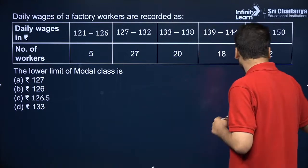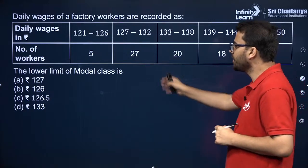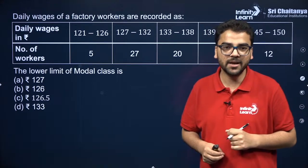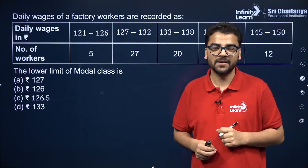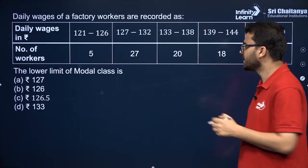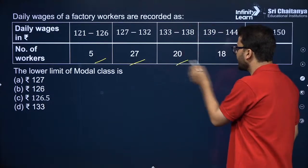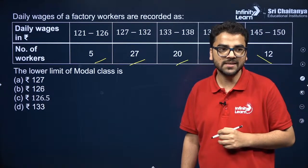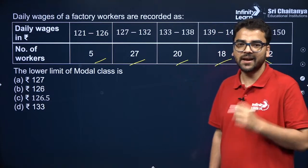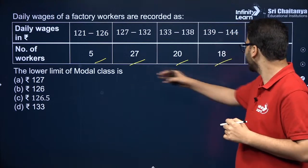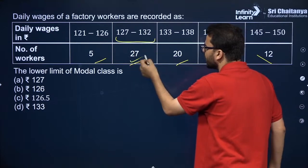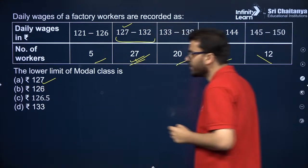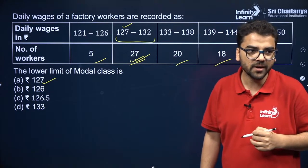A very basic question — can you tell me the lower limit of the modal class? The frequencies here are 27, 20, 18, and 12. The modal class is the class interval having maximum frequency. The maximum frequency here is 27, so the lower limit of the modal class is 127 rupees. That is the answer to this question.